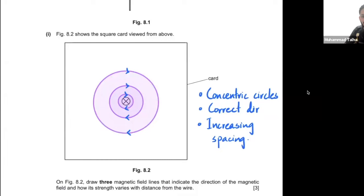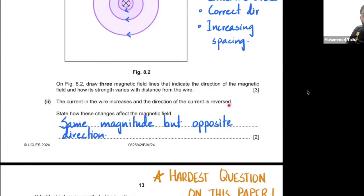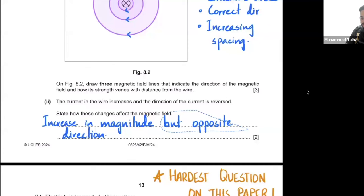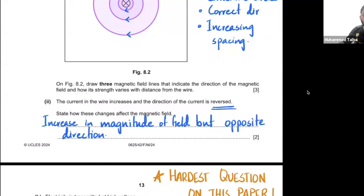If the current increases and its direction is reversed, state how these changes affect the magnetic field. An increase in current produces a stronger magnetic field — so the magnitude of the field increases. A reversal of the current direction means the thumb now points the opposite way; the direction of the field lines reverses from clockwise to anti-clockwise.